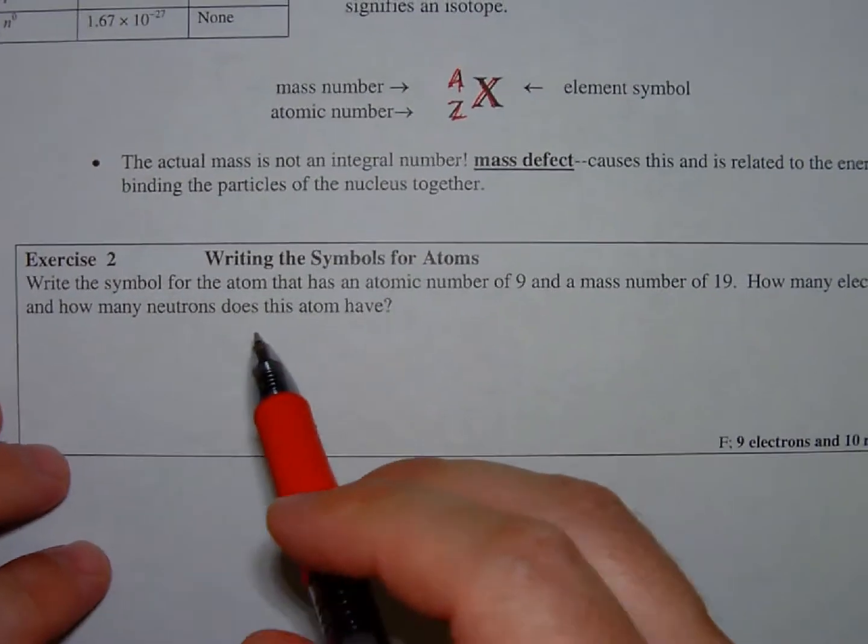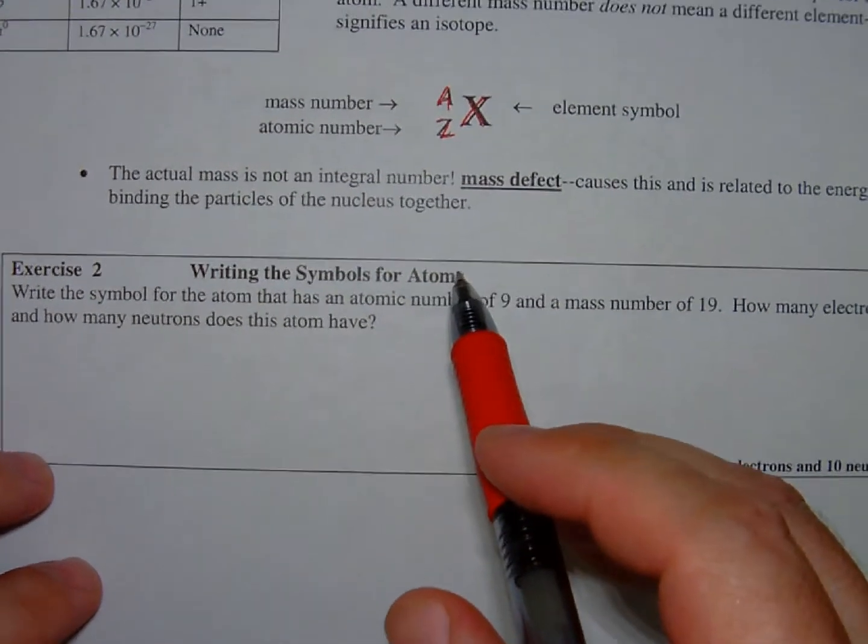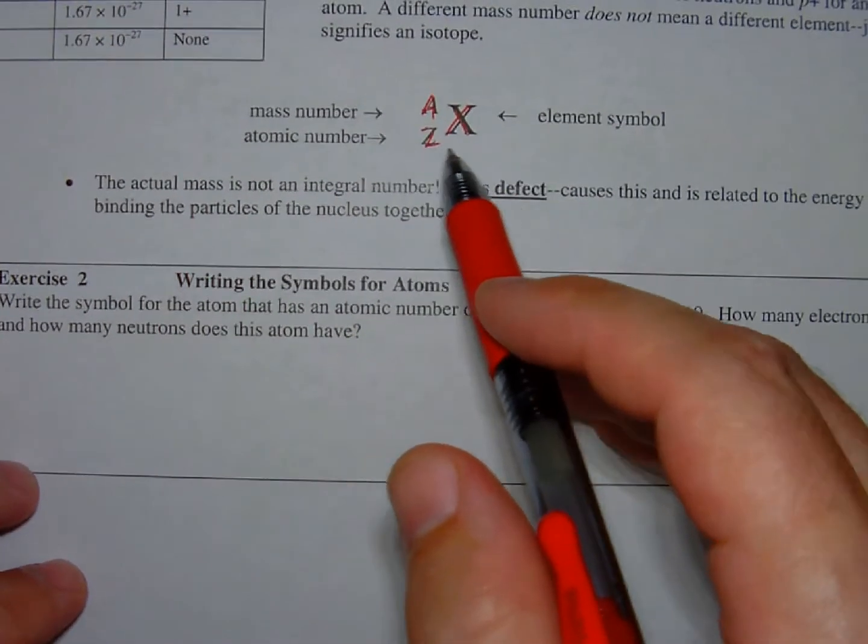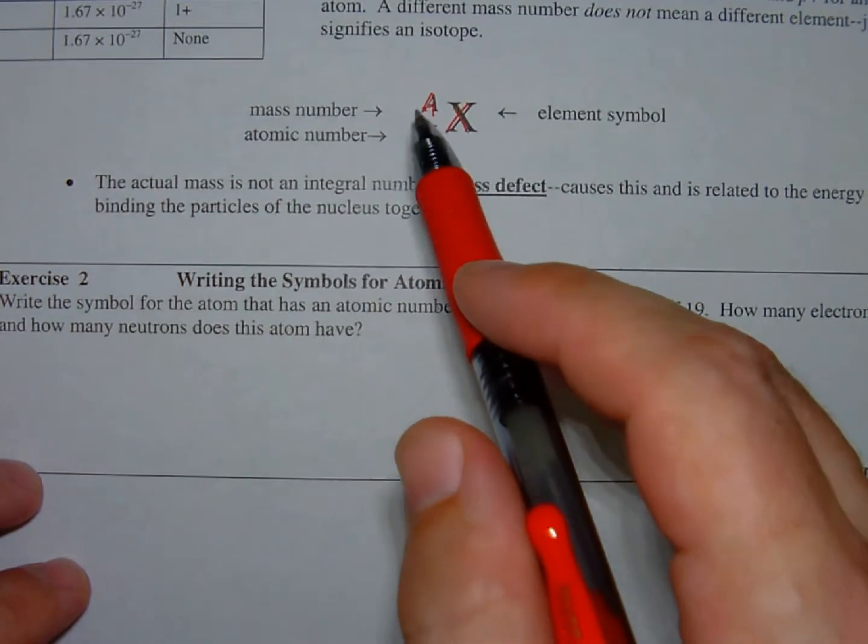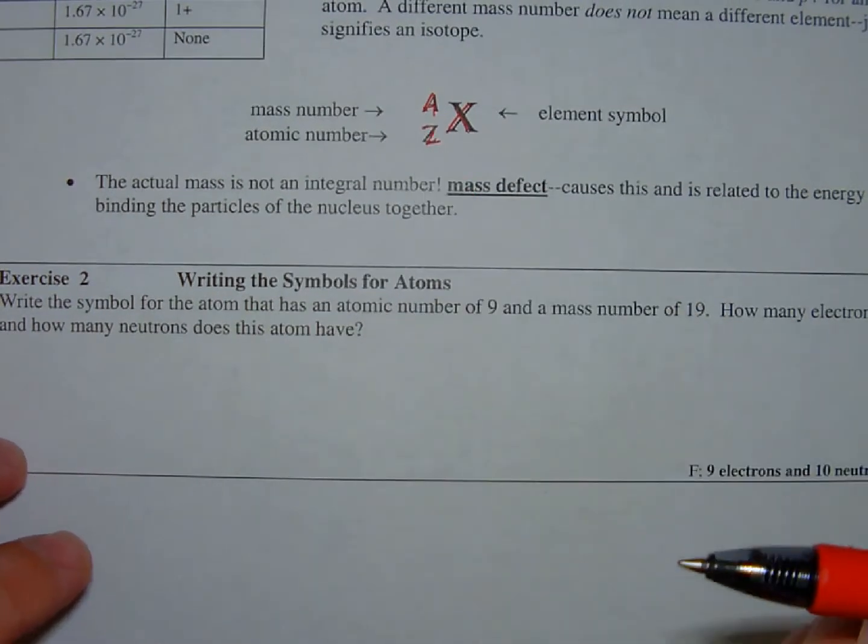Let's get to the second exercise in the second chapter, writing symbols of atoms. It's very common that you will get information formatted like this on the AP exam, and you'll have to use this information to solve the rest of the question.